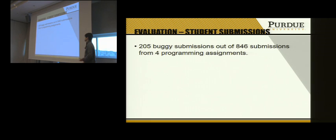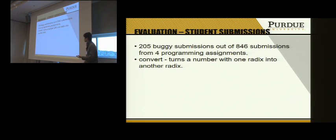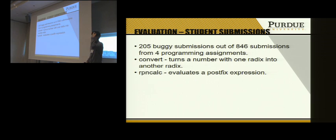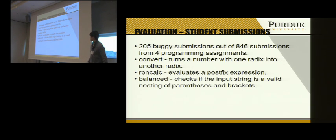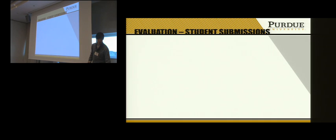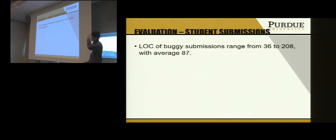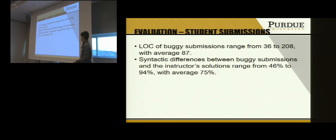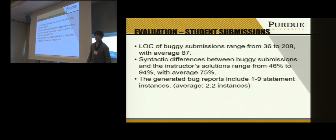We evaluated our system on 205 buggy submissions from four programming assignments: a converter (converting a number with one radix into another), an RPN calculator (evaluating a postfix expression), a balance checker (checking if a string is valid), and a word counter (counting the frequency of each word). Bug submissions averaged 87 lines of code, with on average 75 percent of code differing from the instructor solution. The generated bug reports include on average only 2.2 statements, suggesting our output is very succinct.